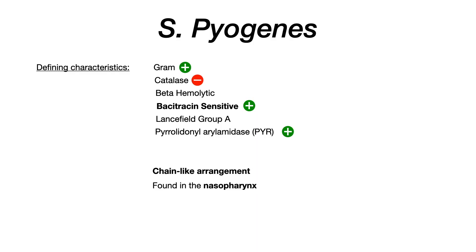Strep pyogenes is gram positive, catalase negative, beta hemolytic, and bacitracin sensitive. That bacitracin piece is critically important because it differentiates Strep pyogenes against Strep agalactiae if the test writer doesn't give you any other information.